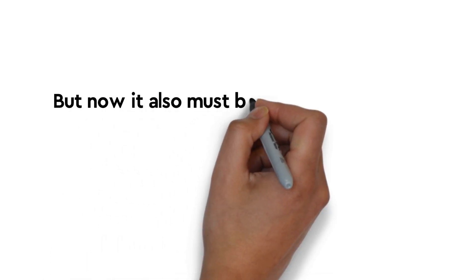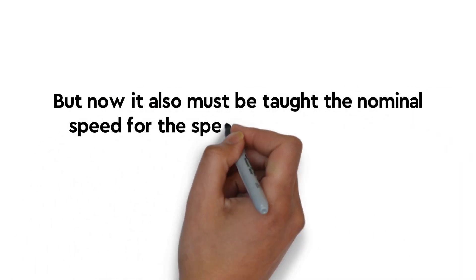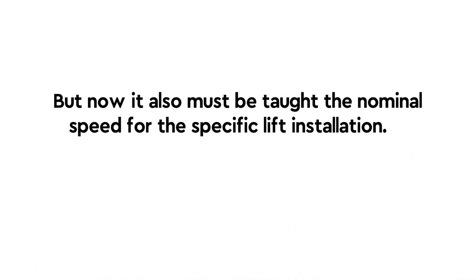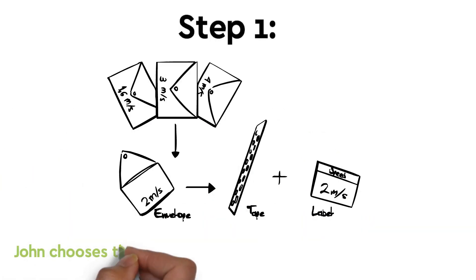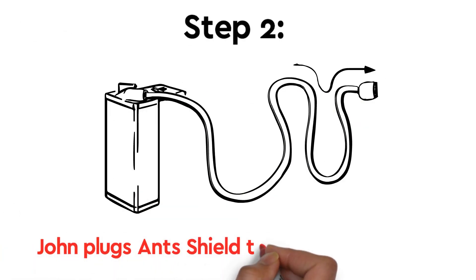But now, it also must be taught the nominal speed for the specific lift installation. But how? Step 1: John chooses the sealed envelope with the correct speed label. Step 2: John plugs Ant's Shield to the power supply.